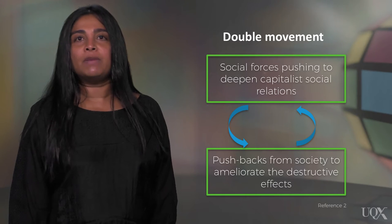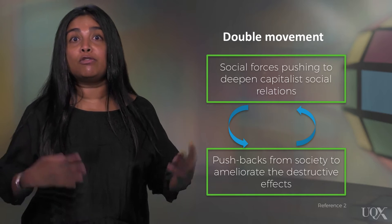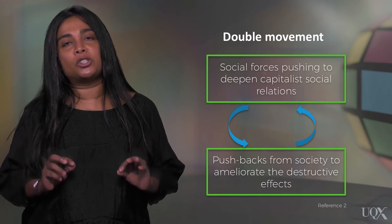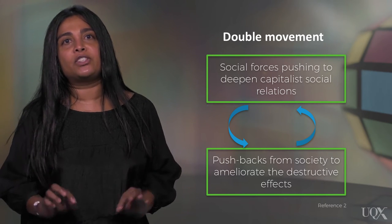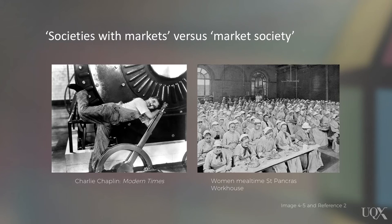Therefore, for Polanyi, social and political relations will always be premised on a double movement. This means that as some social forces push to deepen capitalist social relations, there will always be pushbacks from society to ameliorate the destructive effects this generates, hence the double movement. It is important to be clear: Polanyi was not against markets per se. He recognises that historically there have been many societies with markets. However, the idea of market society is, according to him, new and unprecedented in the history of development globally. As development often aims to further entrench market society, it also drives the double movement.